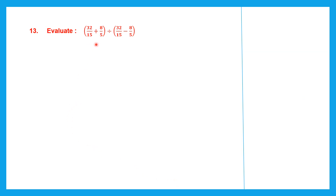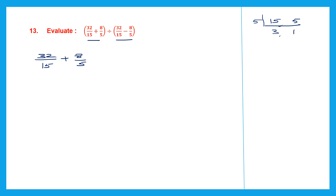Question 13 — evaluate. Let's solve what is within the brackets. The first bracket is 32 by 15 plus 8 by 5. This is addition, so let's find the LCM of the denominators 15 and 5. Using 5: 5 threes are 15, 5 ones are 5. Continue with 3: 3 ones are 3 and 1. So the LCM is 5 into 3, which is 15.